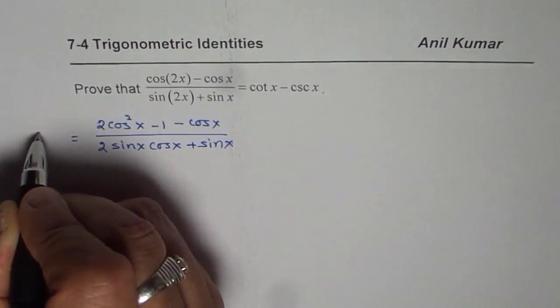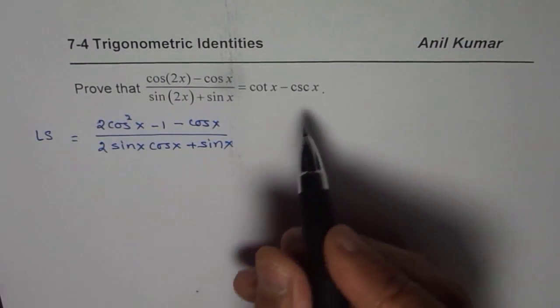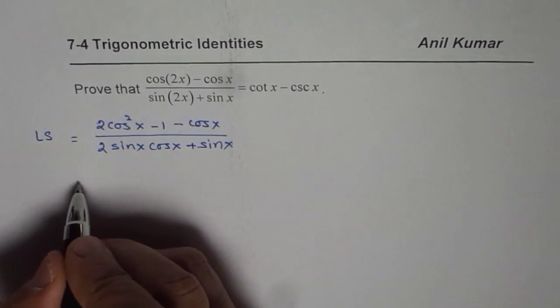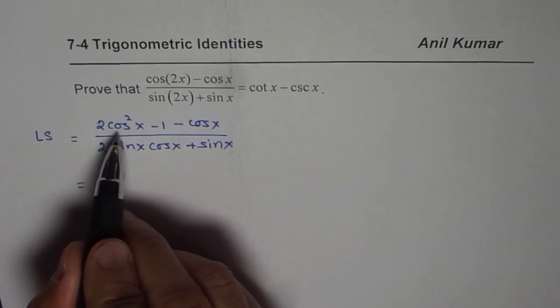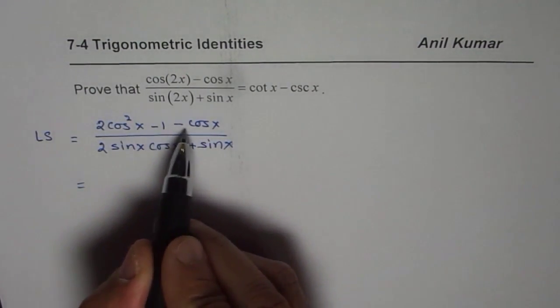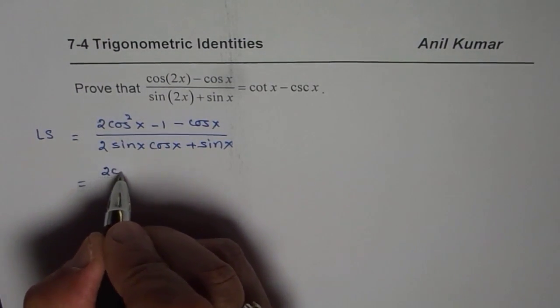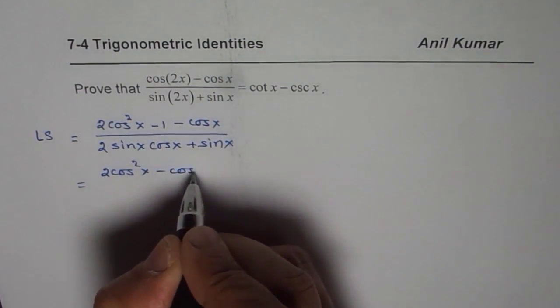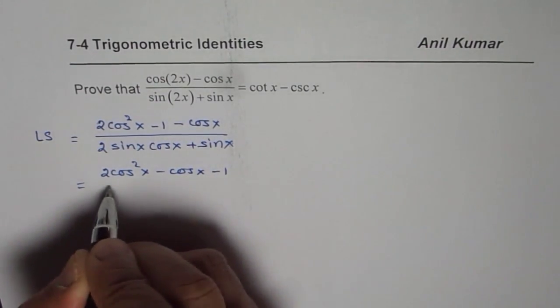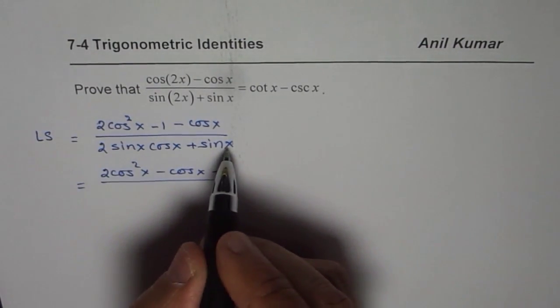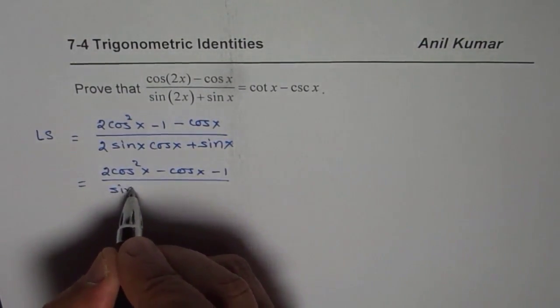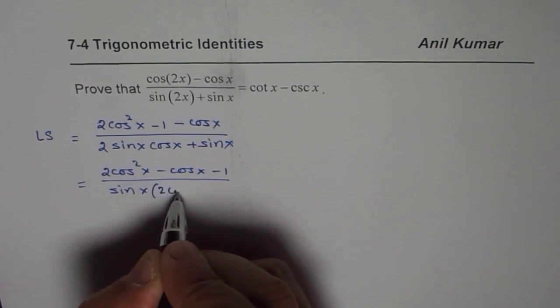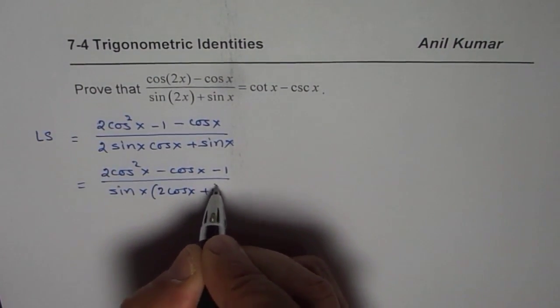And that is the left side. So we will start with the left side and prove it equal to the right side. Now this becomes a quadratic equation in cosine. Let me rearrange this. We have 2 cos squared x minus cos x minus 1, divided by the denominator which can be factored with sin x. So we get sin x times 2 cos x plus 1 here.